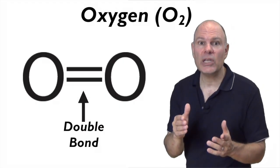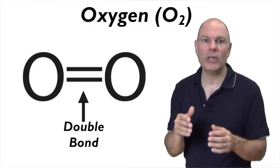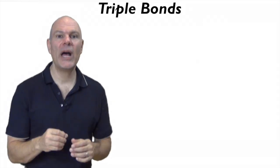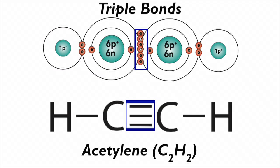Even triple bonds are possible. In acetylene, C2H2 — the fuel used in an acetylene torch — the two carbons have single bonds connecting them to the hydrogens, and triple bonds connecting them to one another. That triple bond involves three shared pairs of electrons.